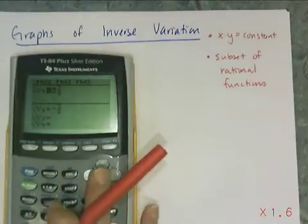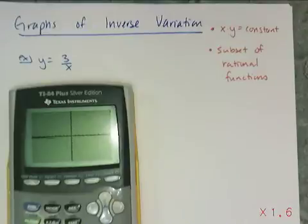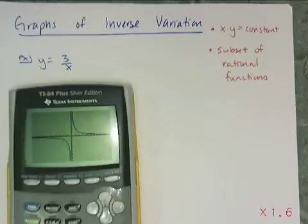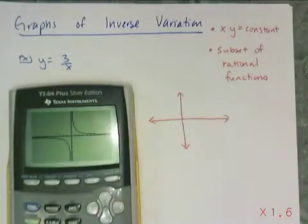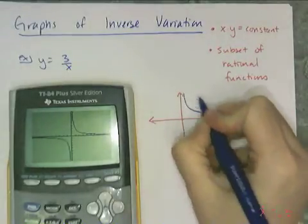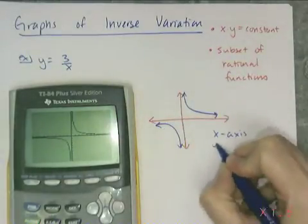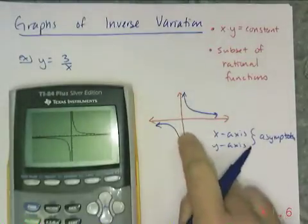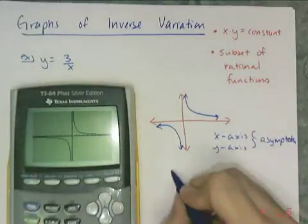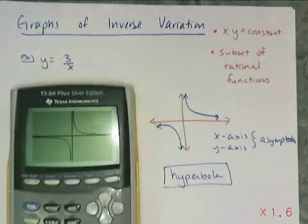The example we'll look at is y equals 3 divided by x, already loaded into the calculator. Pressing zoom 6, the graph appears in two pieces — two little curves that look like exponential pieces. The reason is that it shares a feature with exponentials: an asymptote. In fact, this graph has two asymptotes — the x-axis and the y-axis. The graph gets really, really close to these lines but never crosses them. This graph is called a hyperbola.